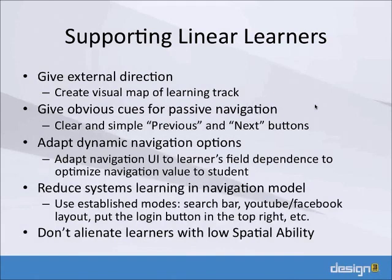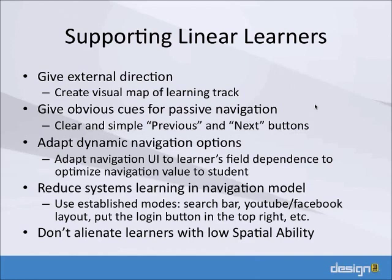For linear learners, you want to give external direction. One way is to create a visual map of learning tracks so they can clearly see where they are, where they've been, and where they're going. You want to give obvious cues for passive navigation — learners don't want to think about where they're going, they just want to go. Nice big previous and next buttons is one way to achieve that. You can also adapt navigation options based on field dependence, and reduce systems learning by exercising effective UI design.